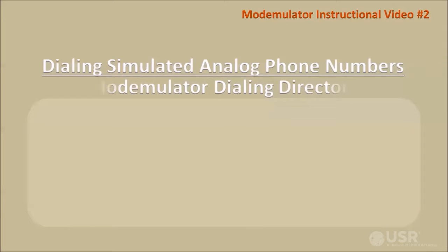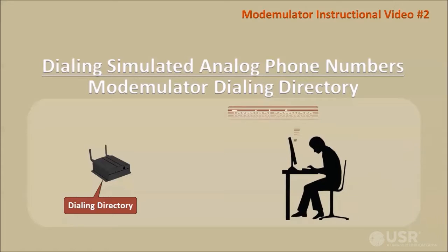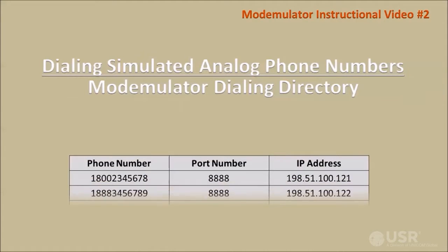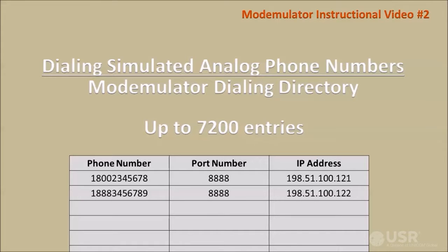Before the Modemulator can dial a simulated phone number, entries must be made into its dialing directory using a terminal to send commands into the Modemulator's terminal port. The Modemulator's dialing directory is a table of phone numbers, port numbers, and IP addresses. It can hold up to 7,200 entries.